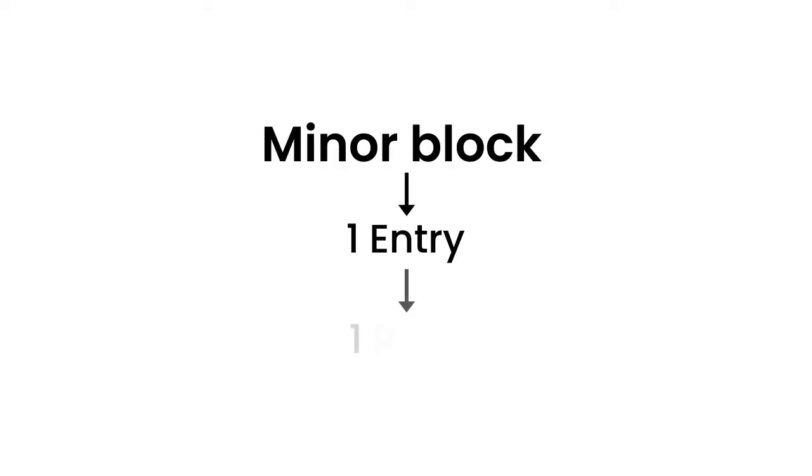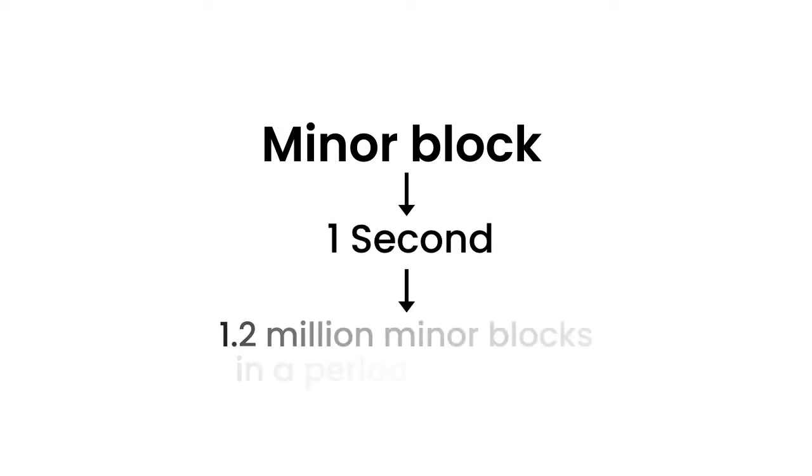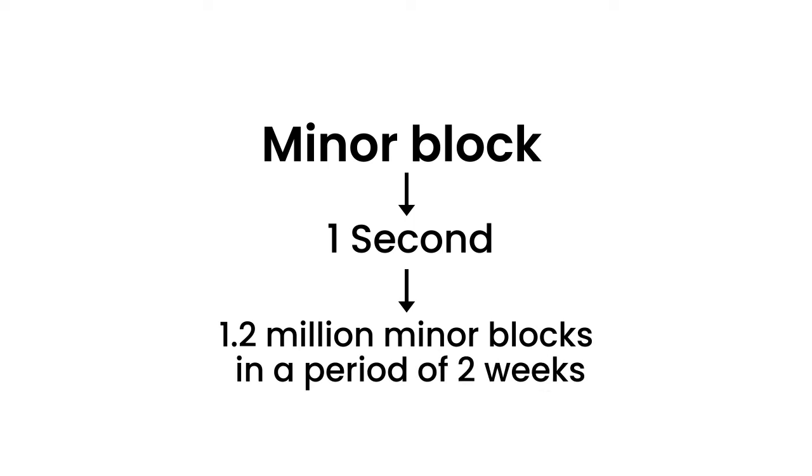Now that we understand Accumulate's different chains, we can imagine the case where a user owns both a regular account and a scratch account and see how they compare in terms of cost. We're going to assume that the user submits entries to both accounts at the frequency of a minor block — meaning every minor block there is one entry that also produces one root. The minor block time is approximately one second, which translates to about 1.2 million minor blocks in a period of two weeks.